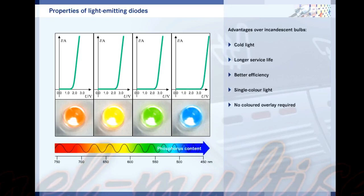The shorter the wavelength of the light, the higher the frequency — ranging from red via yellow and green to blue.